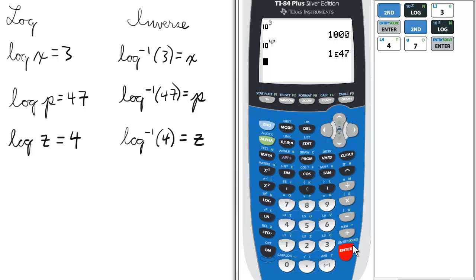Last example: log z equals 4. In the inverse form, it will be inverse log of 4 equals z. Again, we repeat the process. Press second and log for inverse log.